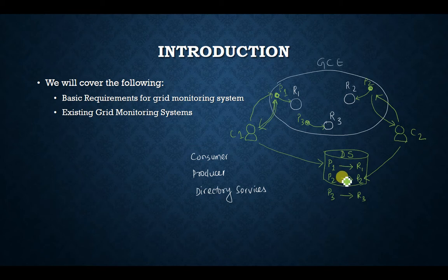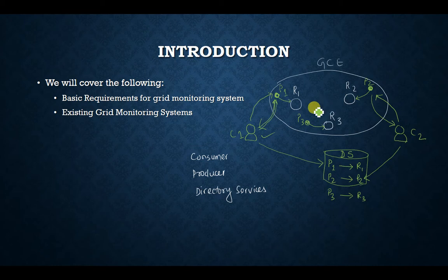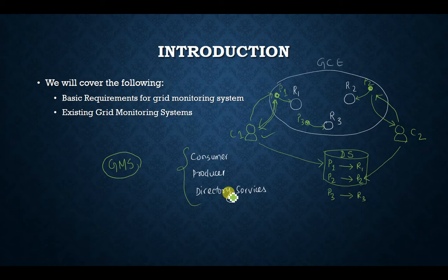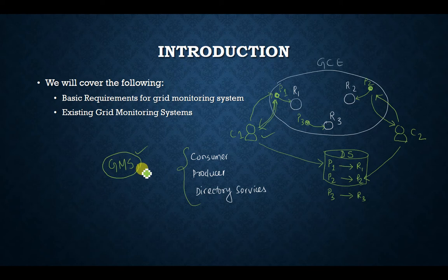The directory service stores information about consumers and producers. Producers register info about monitored events, and consumers can register events of interest. The consumer can be a user, a grid subsystem, or any application that demands monitoring of certain resources. Understanding these roles — consumer, producer, directory service — helps us think about what constitutes a Grid Monitoring System (GMS).